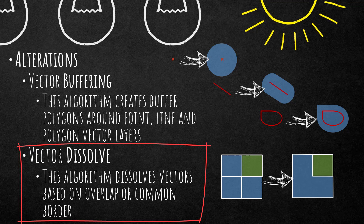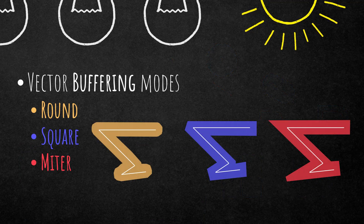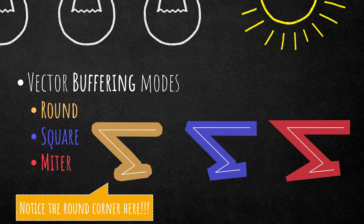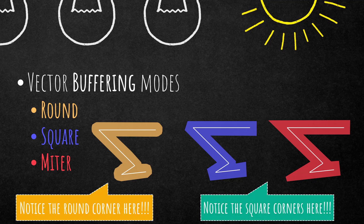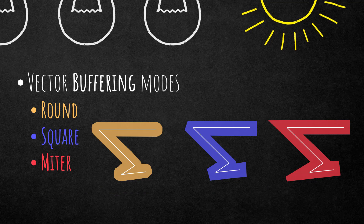Let's have a short look at vector buffering. There are different parameters you can set. First of all, you can set different buffering modes. We have three different buffering modes: round, square, and miter. Round simply creates round corners, square creates square corners, and miter also creates squared corners but you can define a miter limit.